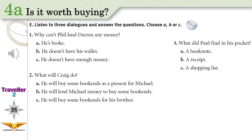Dialogue 1: I came in here for a few things and I don't have enough to pay for all of them. Can you lend me five pounds? Sorry, I can't. Are you broke again? No, it's just... Well, get your wallet out then. I can't — I left it at home.